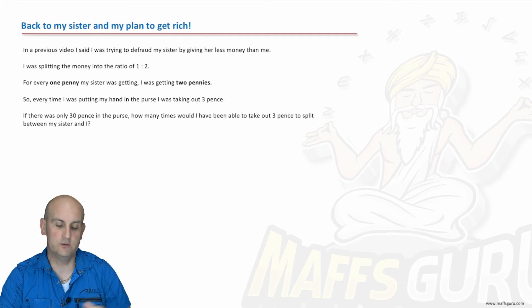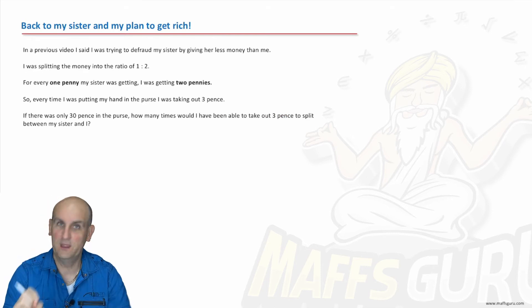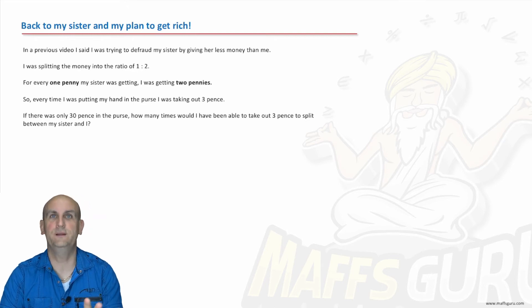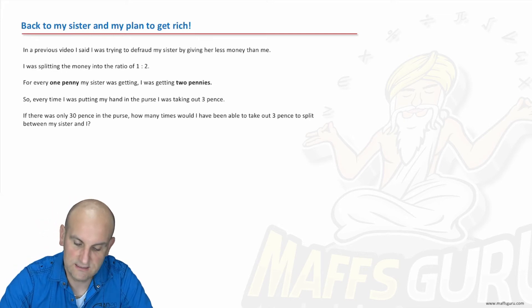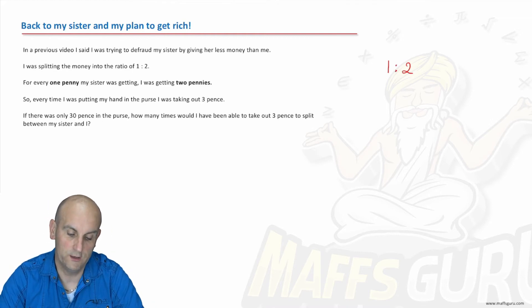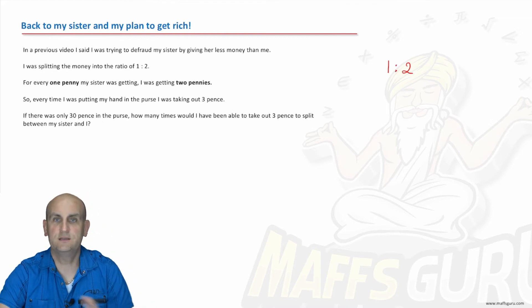Now again, another video I talked about defrauding my sister. I feel so bad. So when my nan was there she gave us the money, we each had a coin, but I was getting the two pence pieces or the two penny pieces and she was getting the one penny piece. Very different, but I was obviously a lot richer, and so in that situation there, as I say, I was splitting the money in a ratio of 1 to 2. So here's the question.